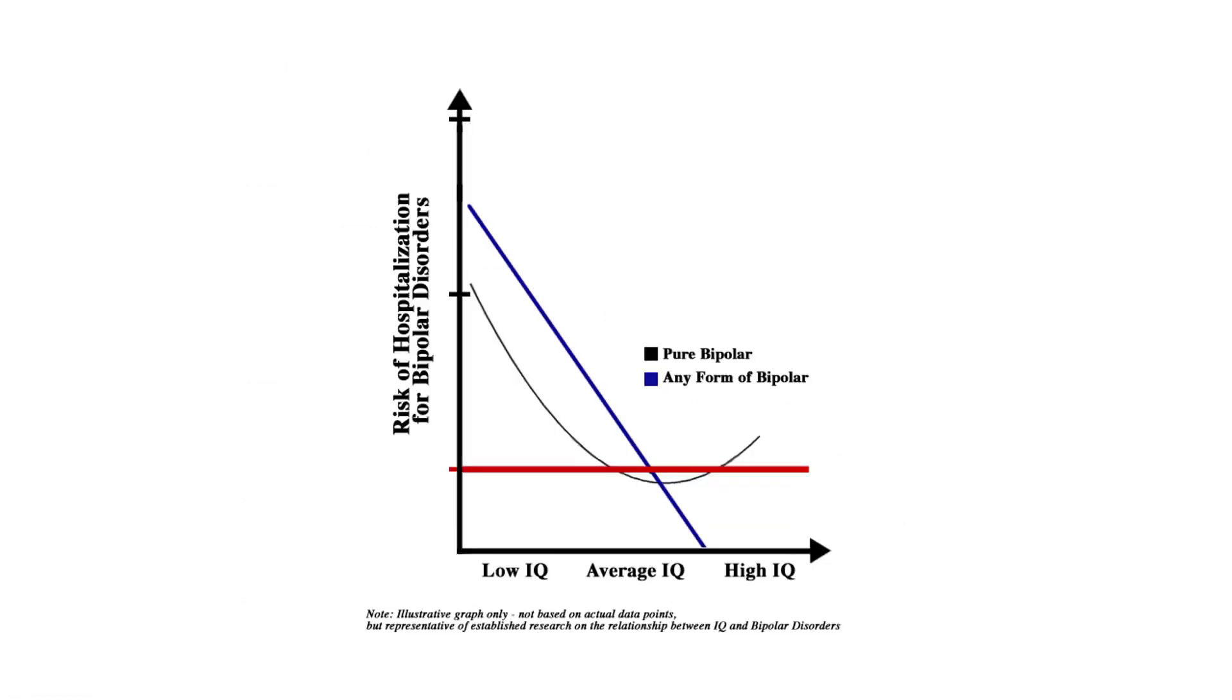Risk of hospitalization for bipolar disorders. Low IQ is very, very high and it declines down. This is any form of bipolar and it does go up if you have very high IQ as well. So you almost want to be in this above average sweet spot in here. That's where you want to be.